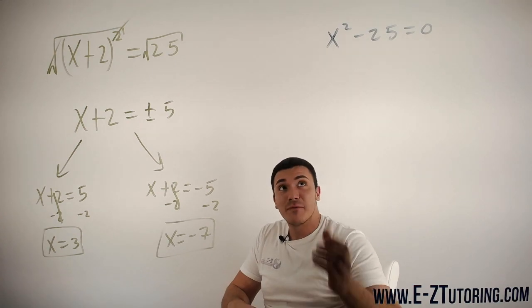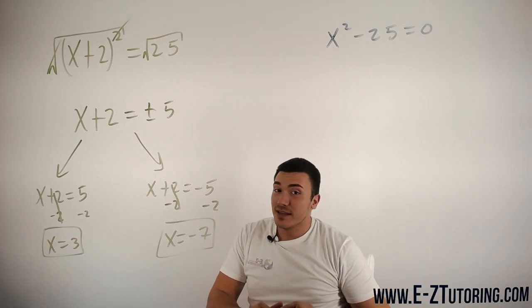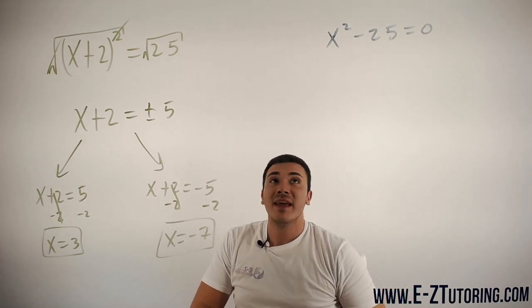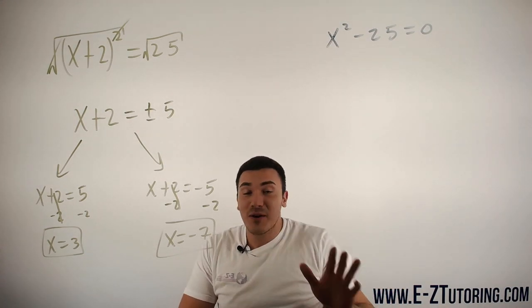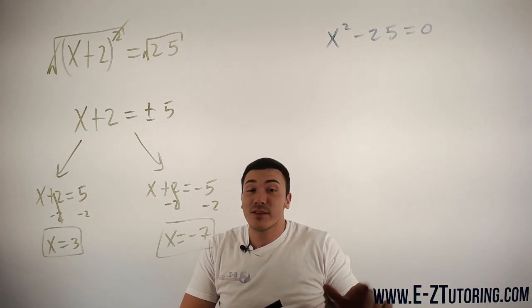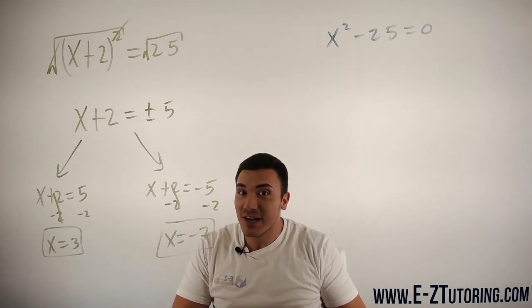That is the first case. Now for the second case, this one's actually even easier. Like I said, you want to get your x² by itself. No matter what is squared, you just want to get that square by itself on the left side.